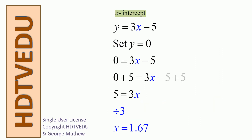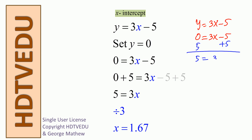For the x-intercept, where does the graph touch the x-axis? On the x-axis, y is always equal to 0. So set y equal to 0: you get 3x minus 5 equals 0. Add 5 to both sides to get 5 equals 3x. Divide both sides by 3, and you get x equals 5 over 3, which is 1.67.